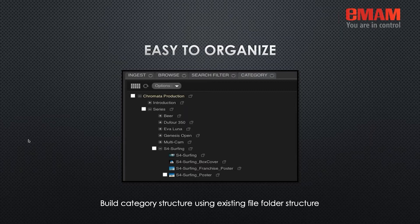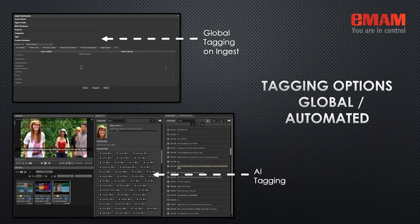Each category can have its own permission levels specifying who gets to see it, all the way down into subfolders. Global tagging is also a key feature — you can tag media on ingest or tag it later after ingestion, globally tag a group of assets, or even import metadata through a spreadsheet.